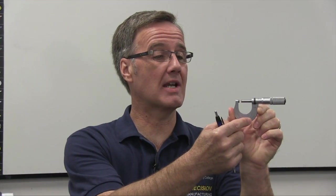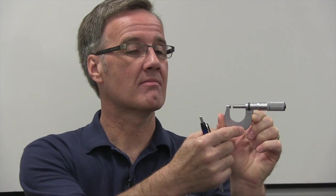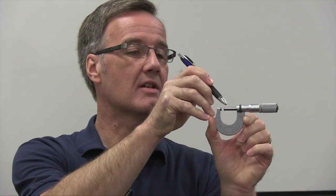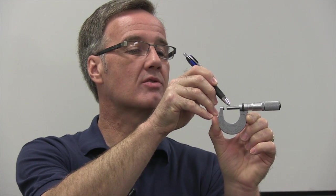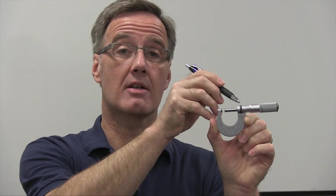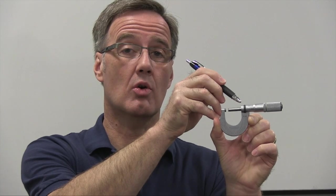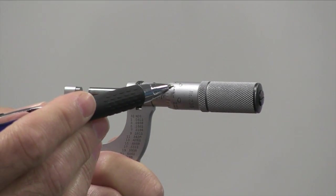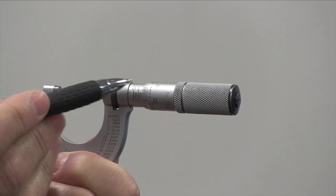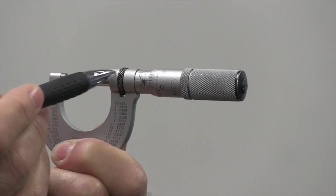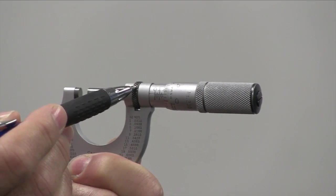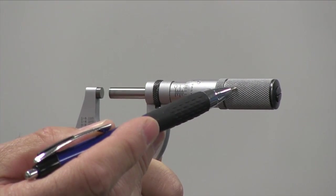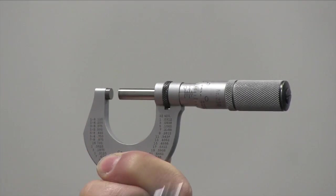I'm holding the frame of the micrometer. Here we have the anvil, the measuring face. We have our spindle which rotates, a lock to hold the measurement, the sleeve and the thimble, and graduations on each of these. And here we have the friction thimble that allows us to take measurements equally from person to person.